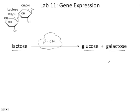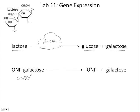In lab, we're going to watch a slightly different reaction taking place. We're going to use this molecule called ONPG, which stands for O-nitrophenol galactose. The bond between the ONP and the galactose gets broken down to give us ONP and free galactose, and this is also catalyzed by the same enzyme, beta-galactosidase.